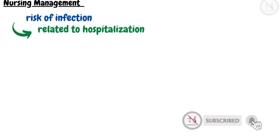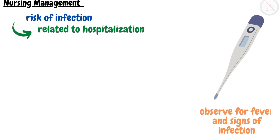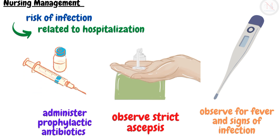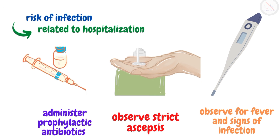The next nursing diagnosis is risk of infection related to hospitalization. Nursing interventions include observing the child for fever and early signs of infection, observing strict asepsis when providing care to the patient, and administering prophylactic antibiotics if prescribed.